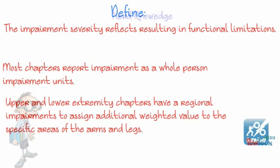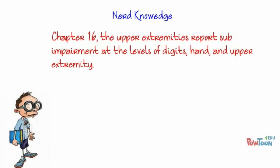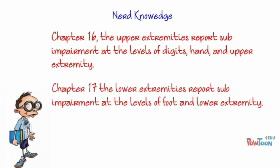In Chapter 16, the upper extremities, sub-impairment levels are reported including digits, hand, and upper extremity impairment. In Chapter 17, the lower extremities, sub-impairment values are reported at the level of foot and lower extremity.